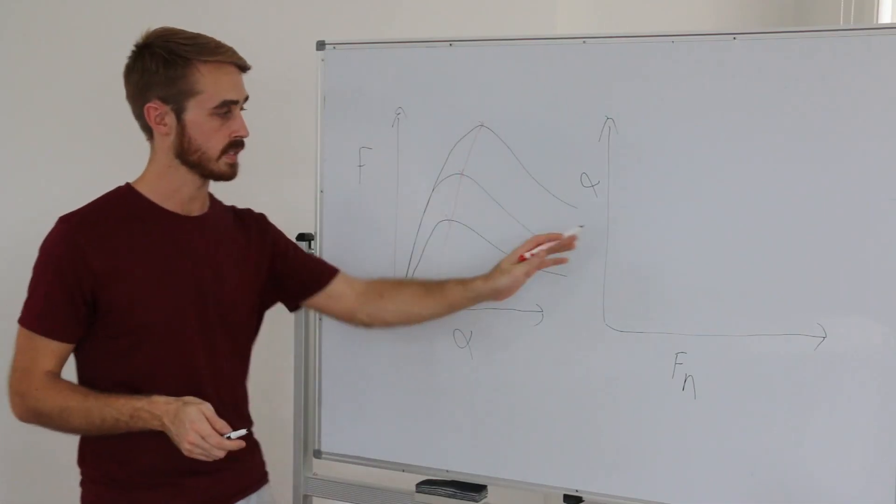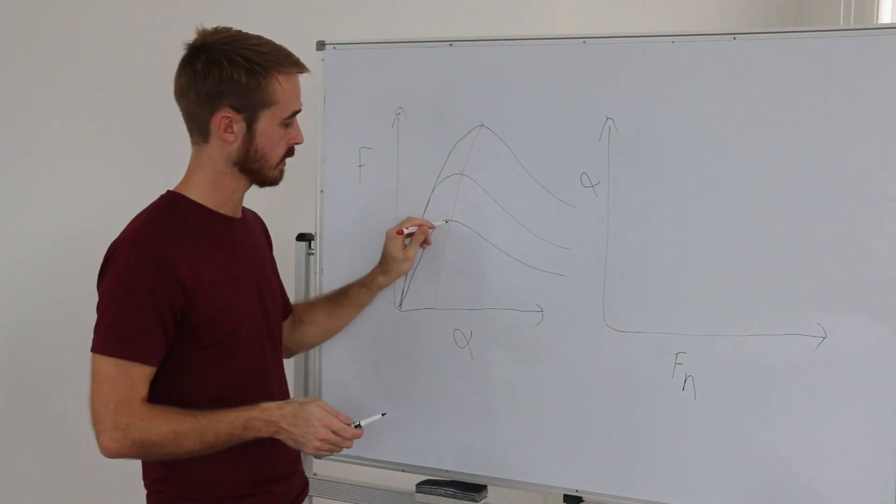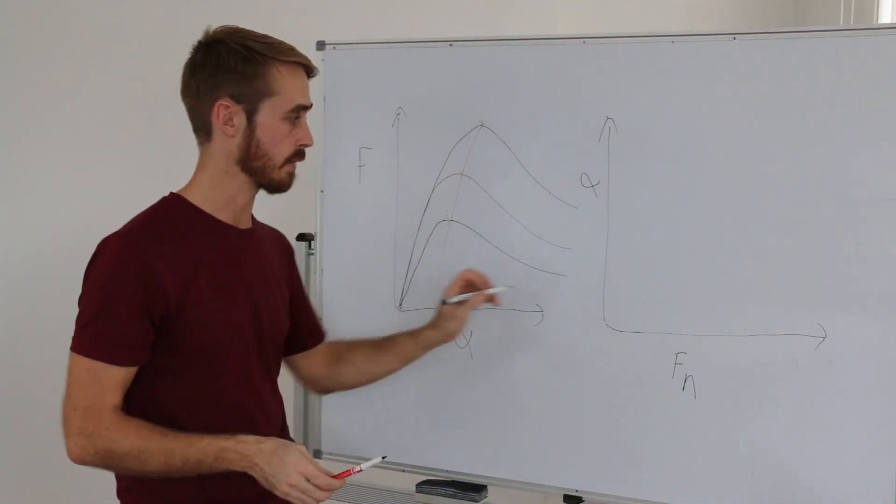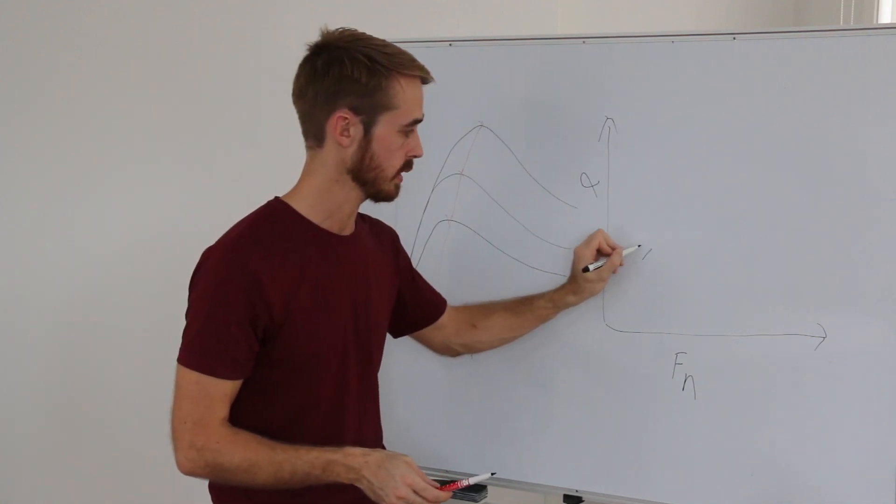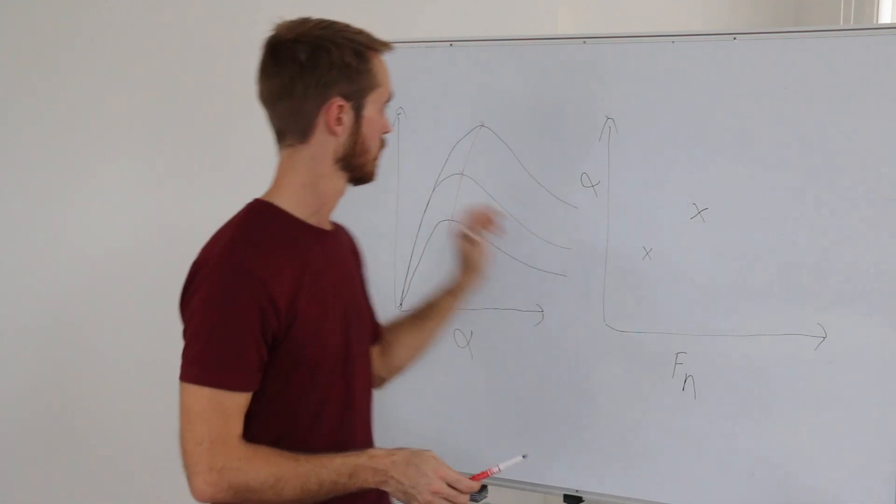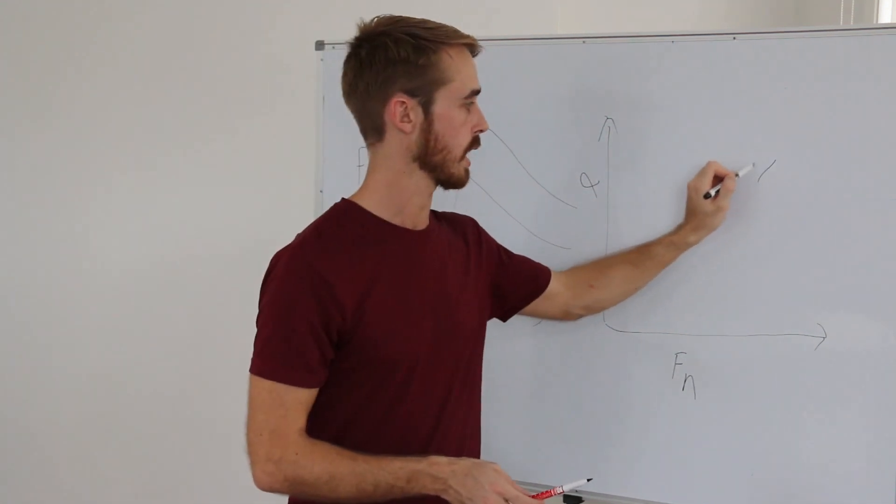Converting our previous graph into this graph, we can see that if we pick our low load case, the alpha is lower, so here at our medium case alpha is higher, higher at high load, higher again.